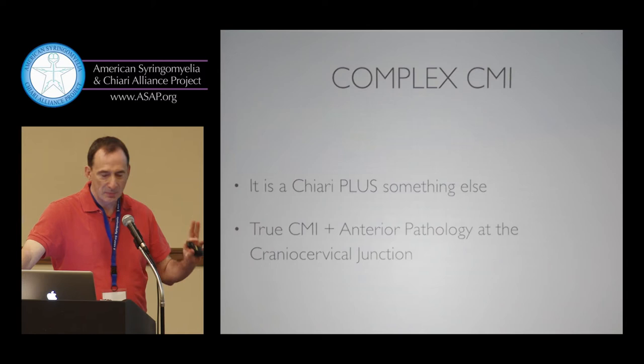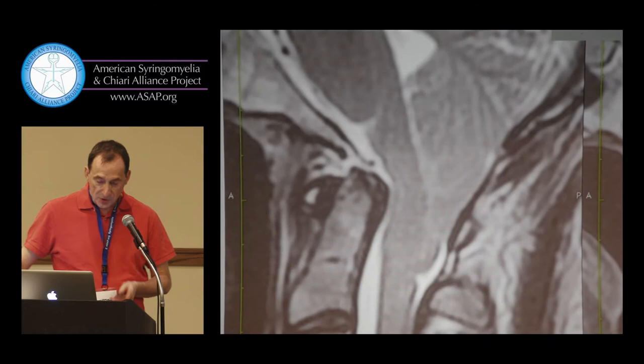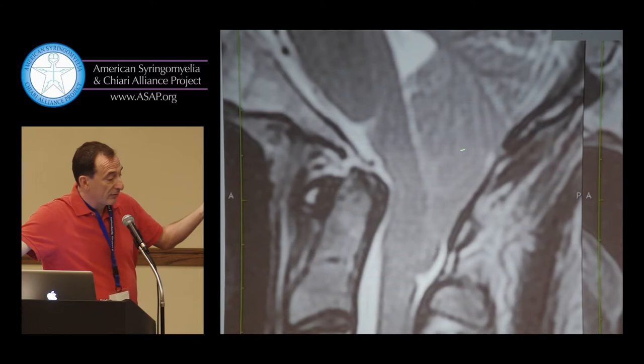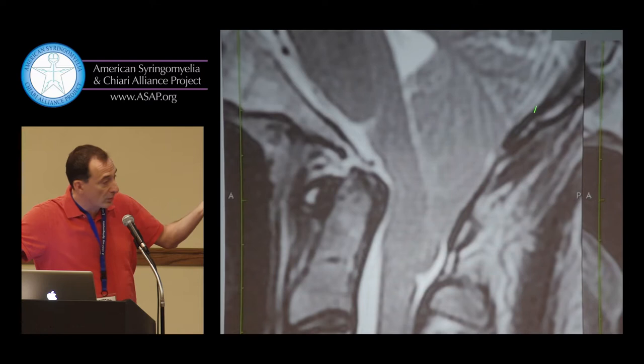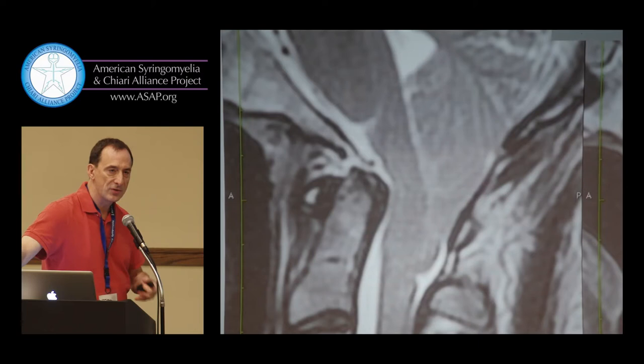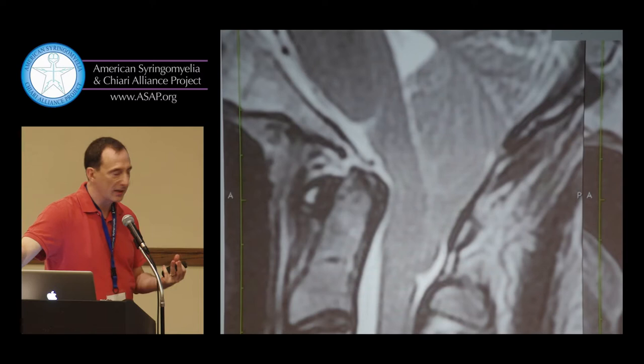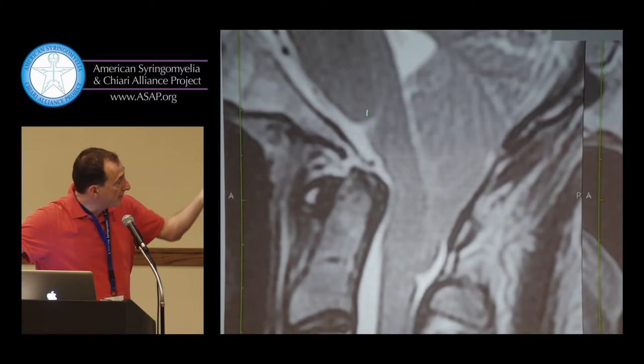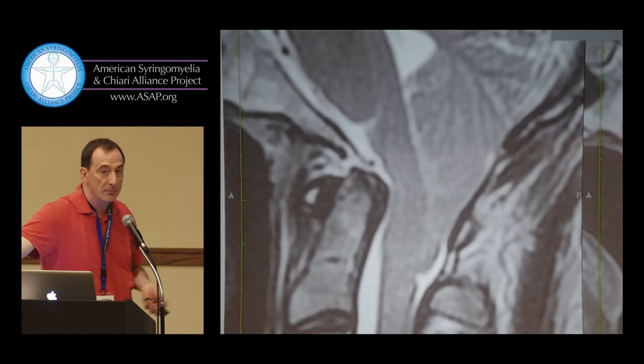So it's a true Chiari malformation plus an anterior pathology at the cranioservical junction. The Chiari malformation involves deep tonsillar herniation and a small posterior fossa — everybody knows that. The cranioservical junction is the landscape in which the Chiari malformation lives. It's all the bony landmarks and ligaments surrounding it. Chiari malformation affects the brainstem from behind, and the anterior pathology is affecting the same target from the front.